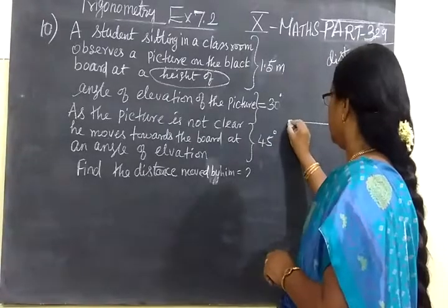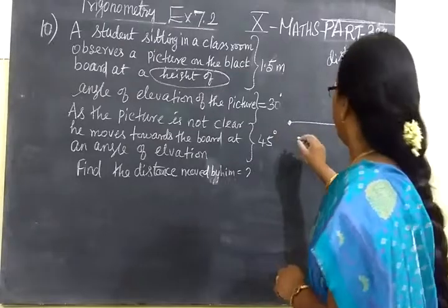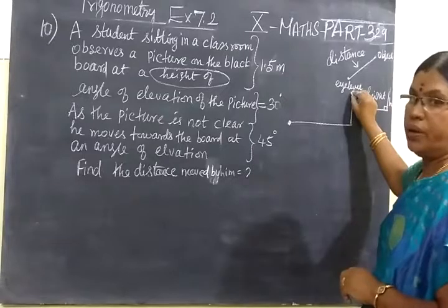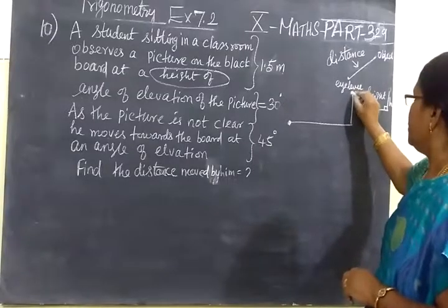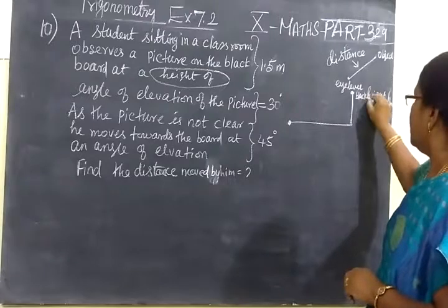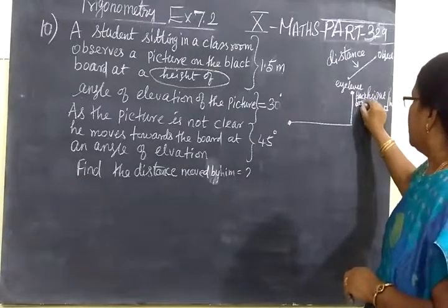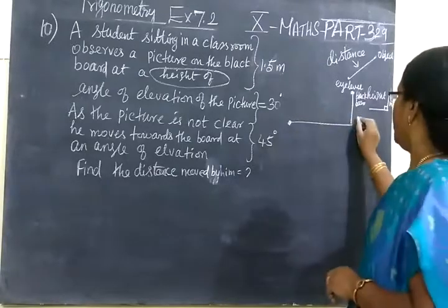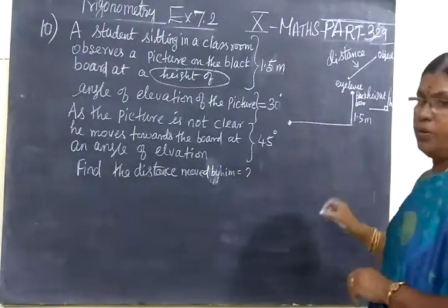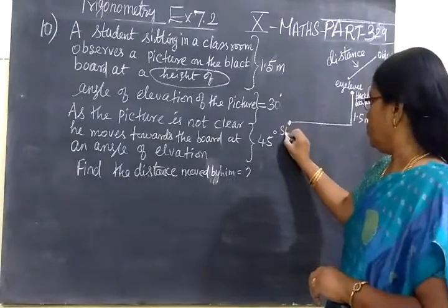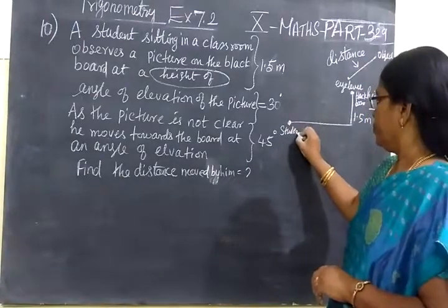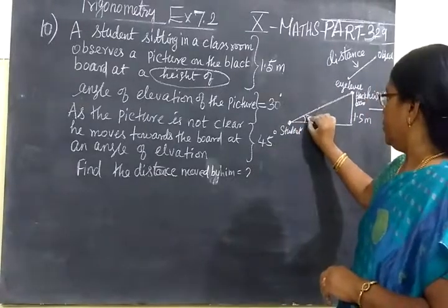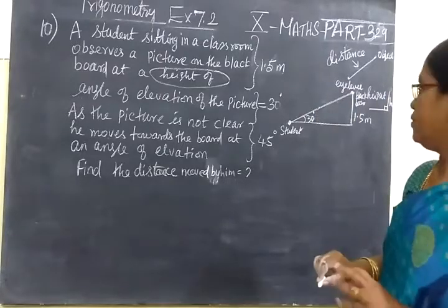A student is sitting here. He is observing a blackboard. He is observing a picture on the blackboard. Now consider this as the blackboard or a picture on the blackboard. He is observing this blackboard is at a height of 1.5 meters. And you have to draw in this eye level here student. Eye level and blackboard. At an angle of elevation 30 degrees. Angle of elevation is 30 degrees.